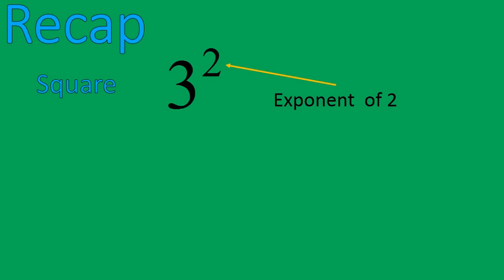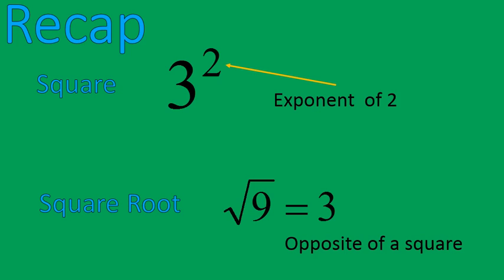And that is everything we're going to do today. Quick recap. Squaring a number means raising it to the power of 2. And taking the square root of a number is the opposite of squaring it. So 3 squared equals 9. The square root of 9 is equal to 3. I hope that lesson was helpful for you. Have a wonderful day.